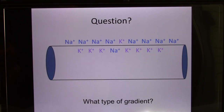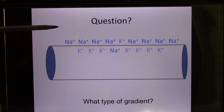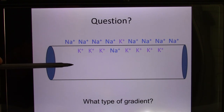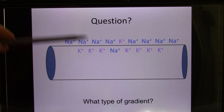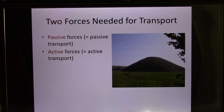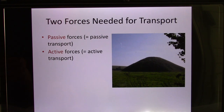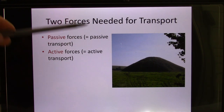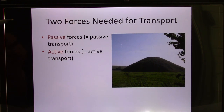That's exactly how your cells are set up. A normal healthy cell has high sodium outside and high potassium inside, and the inside is more negative than the outside. So you have concentration gradient and you have electrical gradient. The force to trigger transport: you have the passive force, which is driven by the concentration gradient and the electrical gradient.